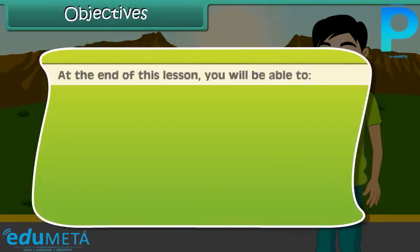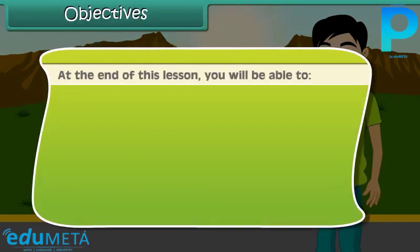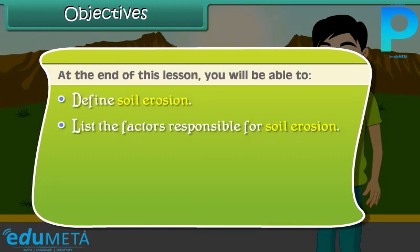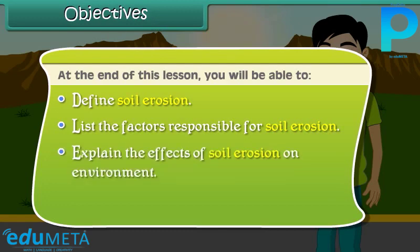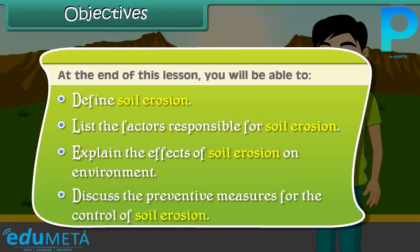Objectives: At the end of this lesson, you'll be able to define soil erosion, list the factors responsible for soil erosion, explain the effects of soil erosion on the environment, and discuss the preventive measures for the control of soil erosion.